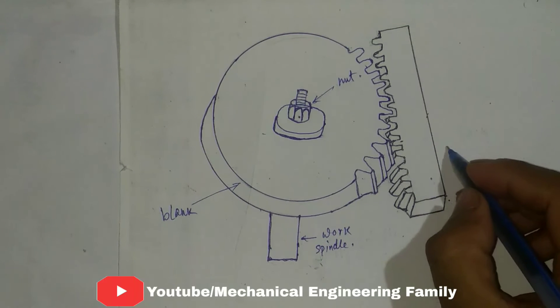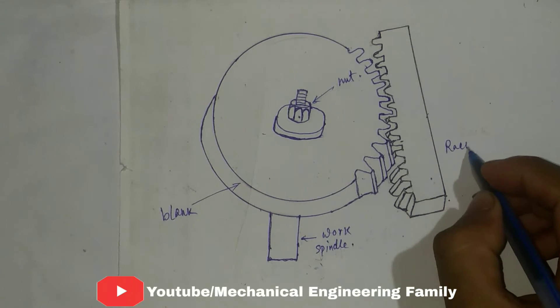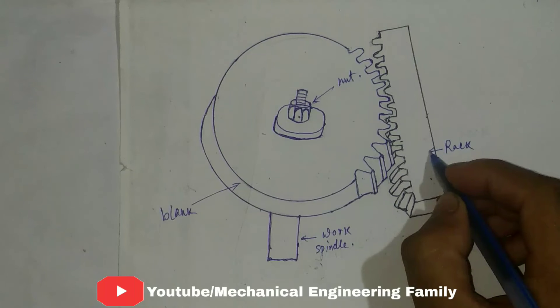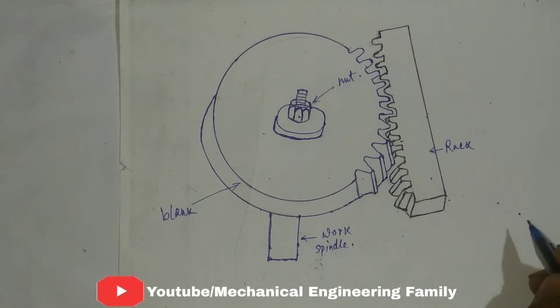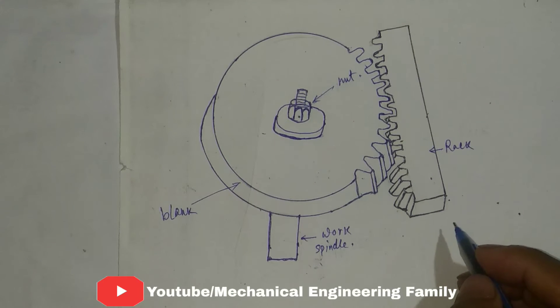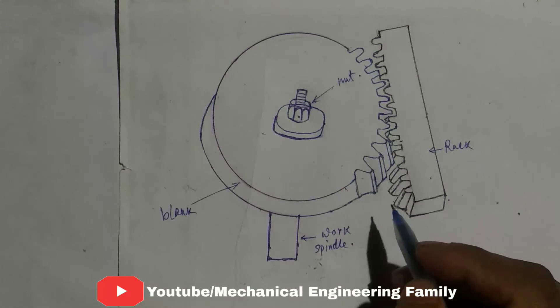This is called rack, and these are the tooth cutters which cut the teeth on the blank.